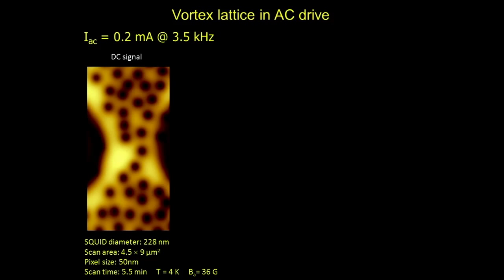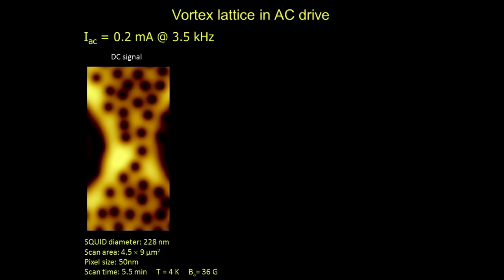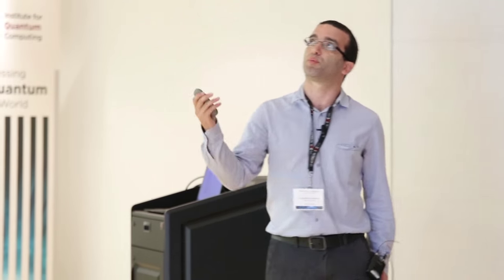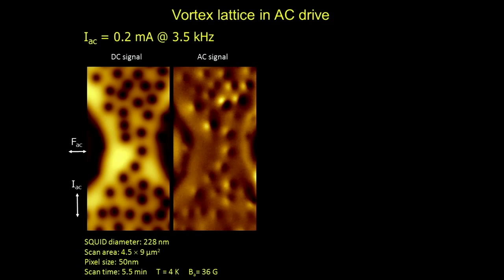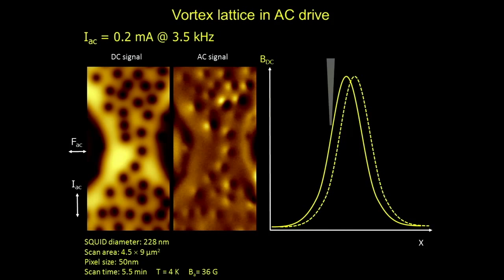Now switching to another sample — the vortices changed color from bright to dark but otherwise the image looks exactly the same: a constricted bridge with dark vortices. What I'm not telling you is that I'm actually driving these vortices with an AC current, so each of these vortices is wiggling inside its potential well, shaking at a frequency of 3.5 kilohertz. The DC time-average just shows static vortices, but looking at the AC signal you see dark and white spots for each vortex. This is because the tip records a modulation of the magnetic field — on one side of the vortex the slope is positive, on the other side it's negative and completely out of phase.